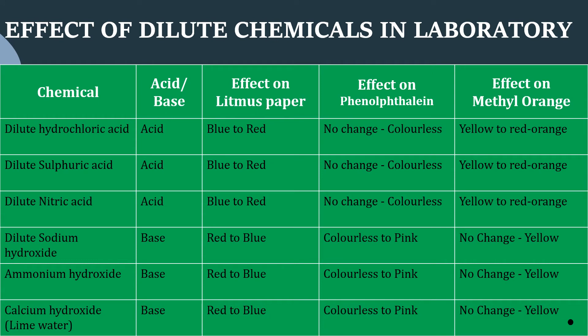Let us discuss the effect of dilute chemicals in the laboratory with the following indicators: litmus paper, phenolphthalein and methyl orange. Acids like dilute hydrochloric acid, dilute sulfuric acid and dilute nitric acid turn blue litmus to red. With phenolphthalein, there is no change — it remains colorless. With methyl orange, it turns from yellow to red-orange. Bases like sodium hydroxide, ammonium hydroxide and calcium hydroxide turn red litmus to blue. With phenolphthalein, it turns from colorless to pink. With methyl orange, no change — it remains yellow.